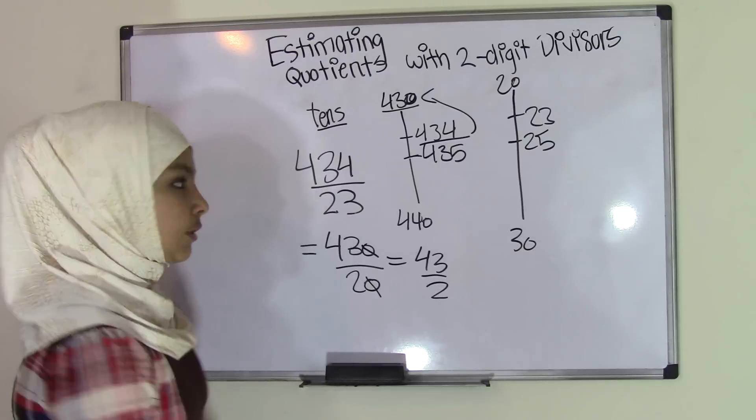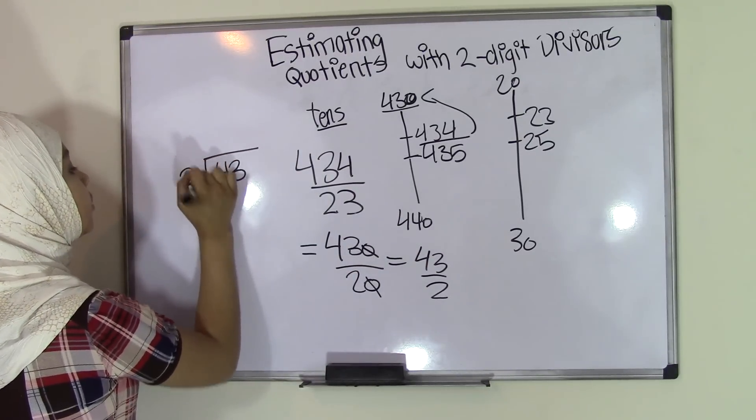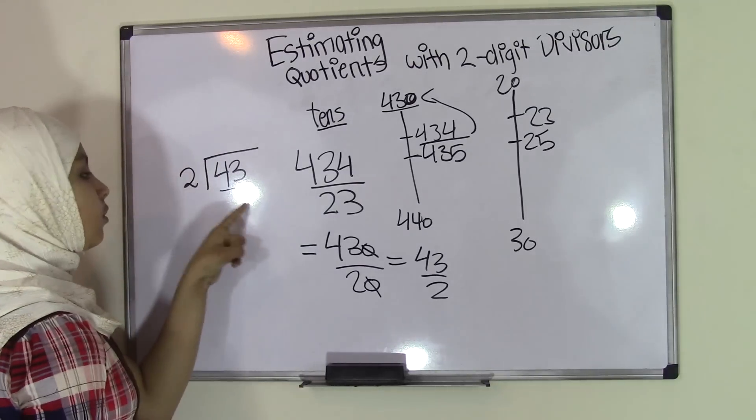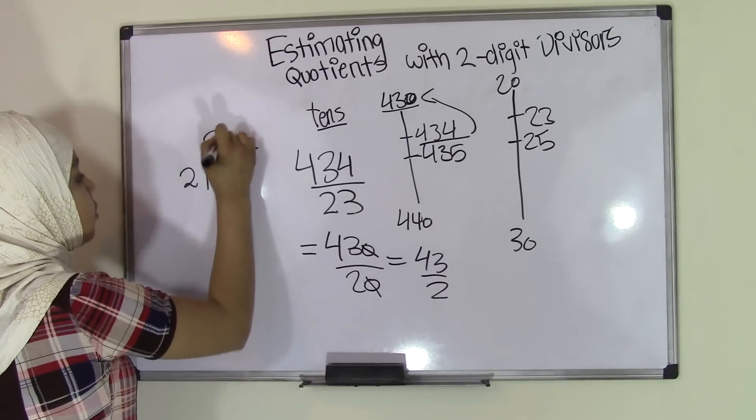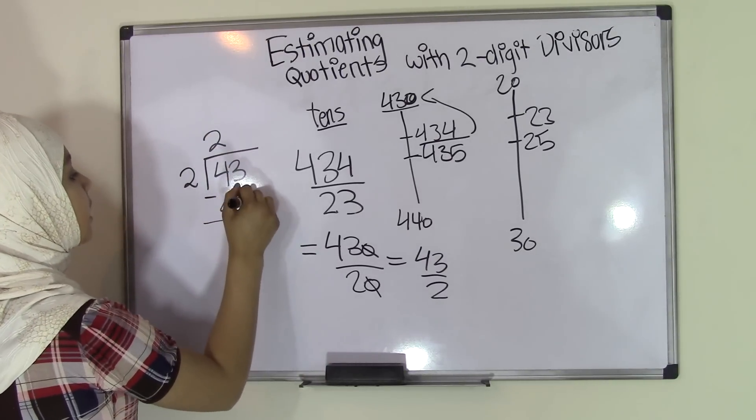All we can do now is do simple division. Let's write 43 as our dividend and 2 as our divisor. Now let's consider number 4 first. How many times is 2 going into 4? 2 times, because 2 times 2 is 4. So we'll subtract that. We get 0, and then we bring down 3.